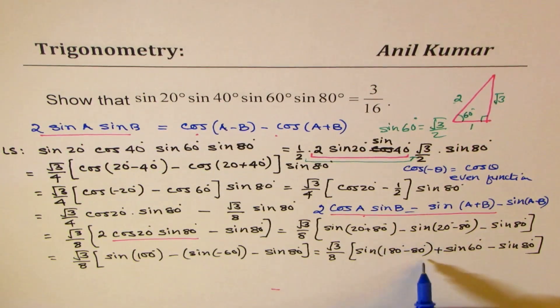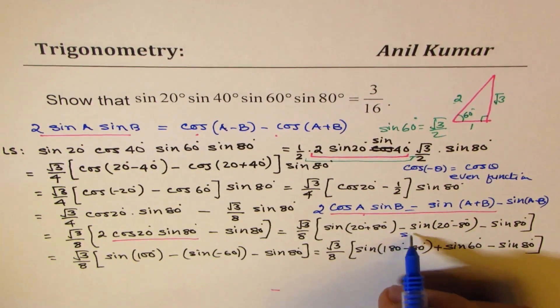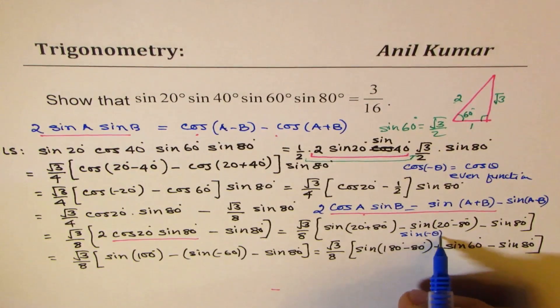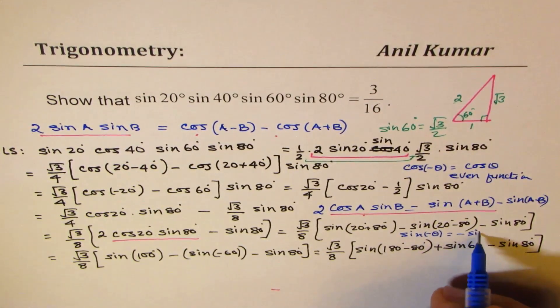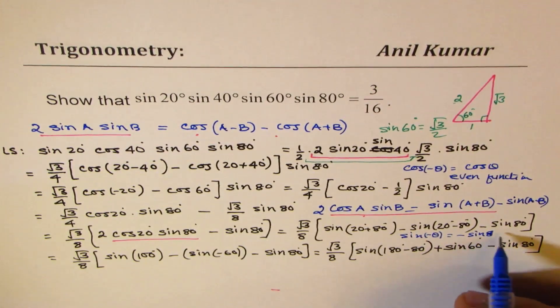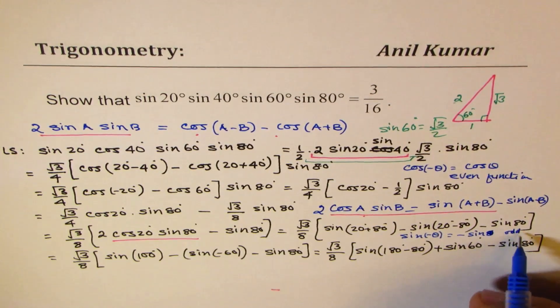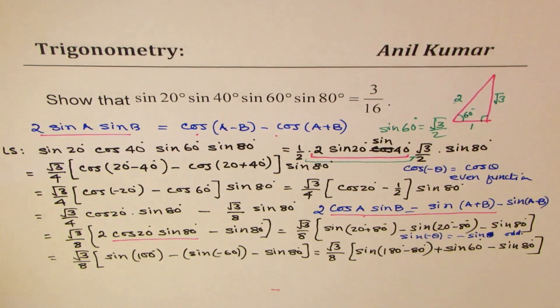So sine is an odd function. So let me write down here. Sine is an odd function. So what I did was, sin(-θ) equals to -sin θ. Odd function. Is it okay? Perfect. Let's continue.